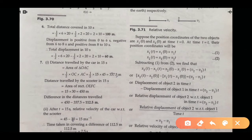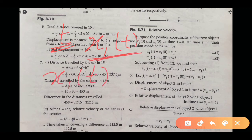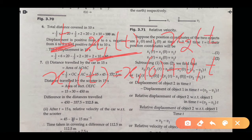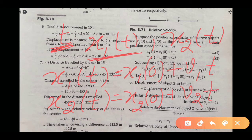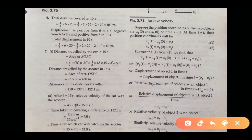अब हमने consider किया है कि किसी particular time interval t पर जो position होगी हमारे first object की, उसे हम लिखेंगे x1(t). x1(t) = x1(0) + v1·t. Similarly, जो हमारा second object है, time t पर उसकी position होगी x2(t) = x2(0) + v2·t.